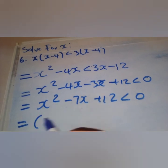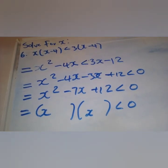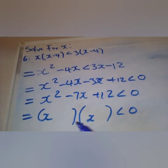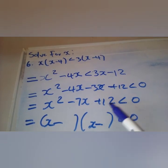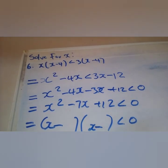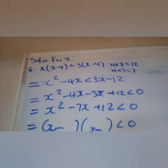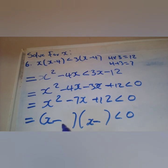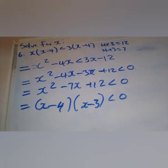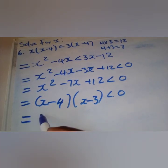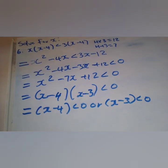We factorize the trinomial. The last term is positive, so the signs inside the brackets must be the same — we use the middle sign, which is negative. Critical values: two numbers that when multiplied give 12 and when added give negative seven — those are negative four and negative three. So we get (x − 4) < 0 or (x − 3) < 0.